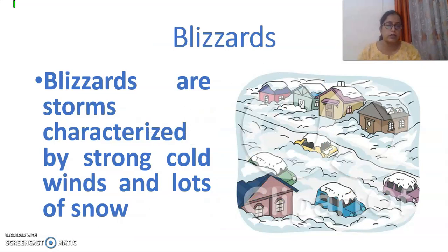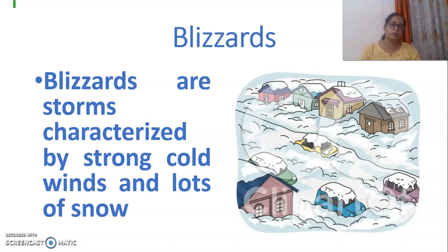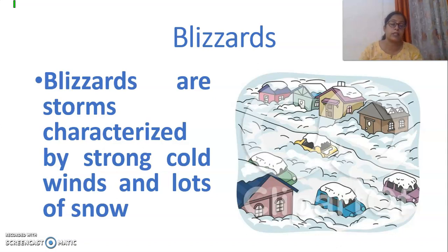First of all, I am going to talk about blizzards. Blizzards are storms characterized by cold winds and lots of snow. We cannot experience them in India, but in places with very heavy snowfall, like America and Australia, these are the places where blizzards do occur.